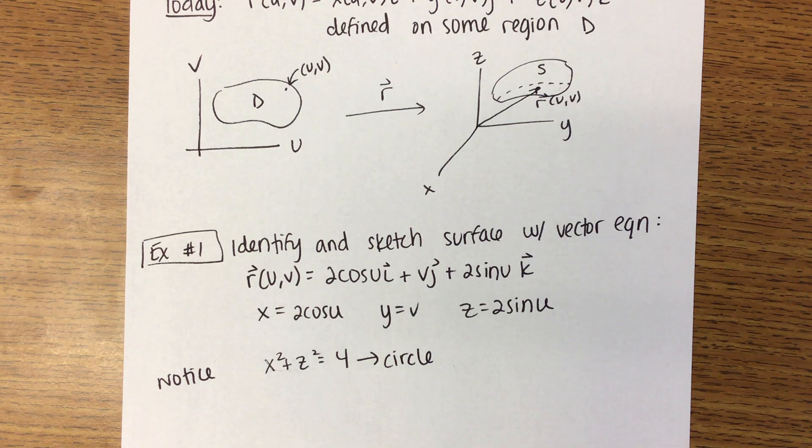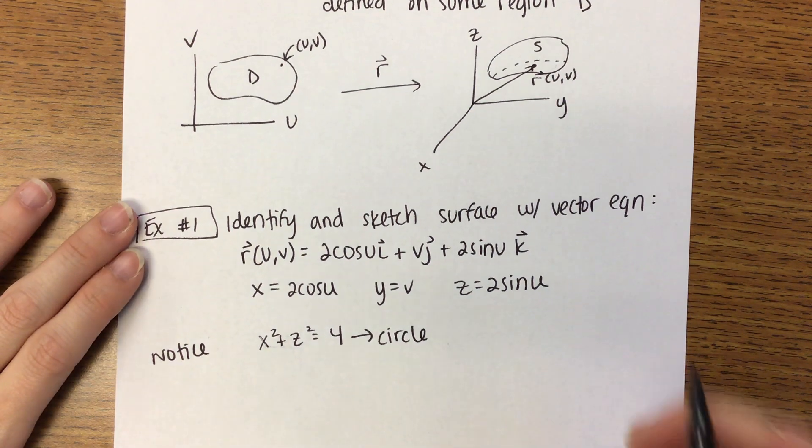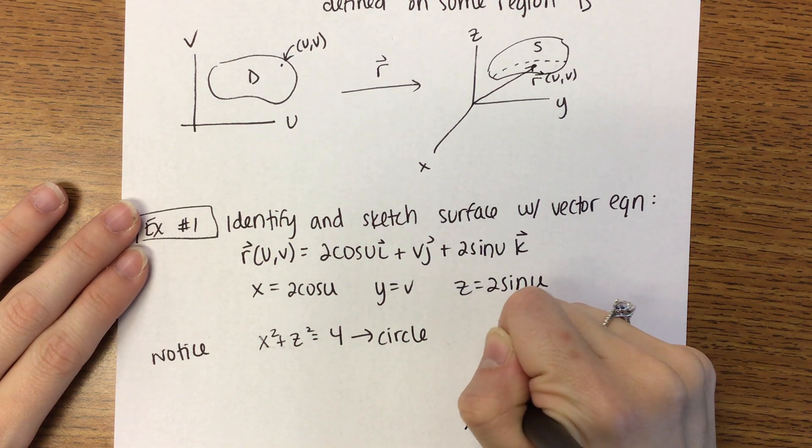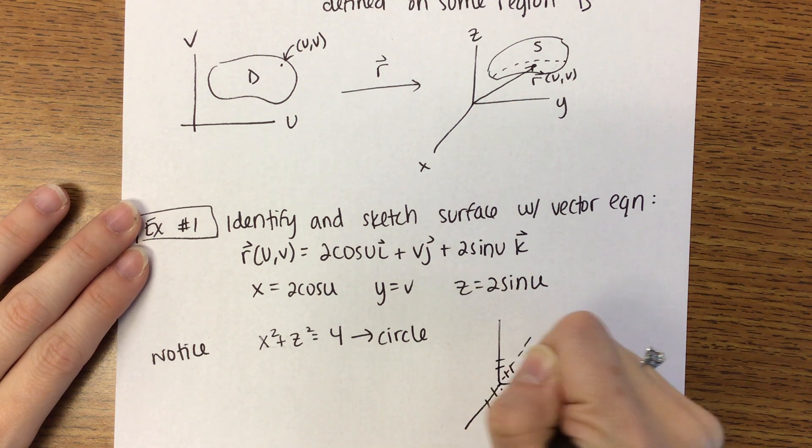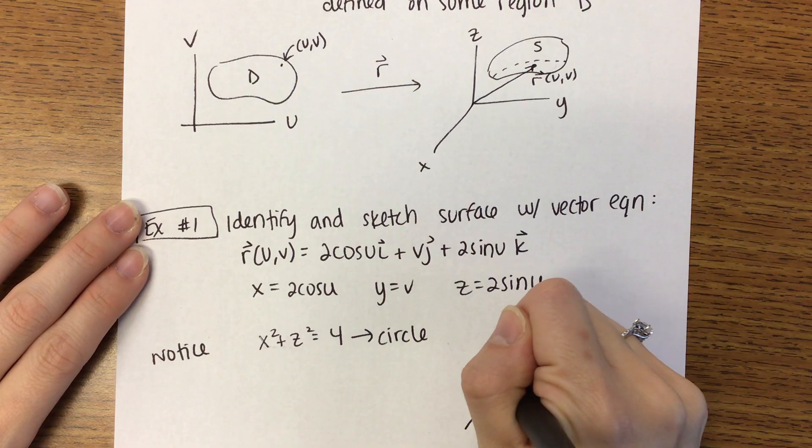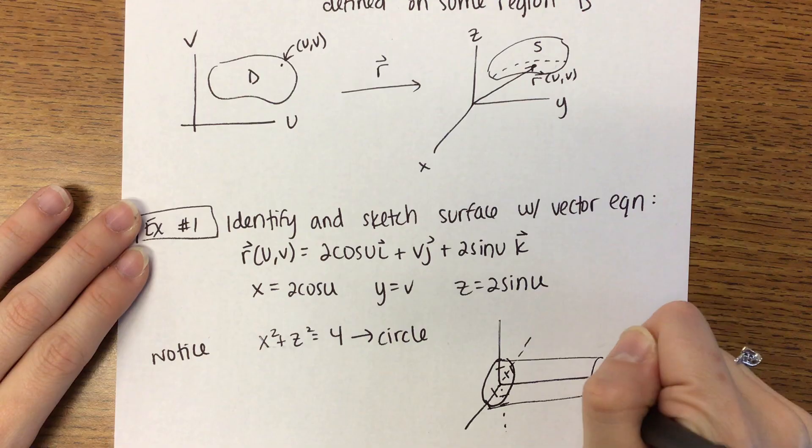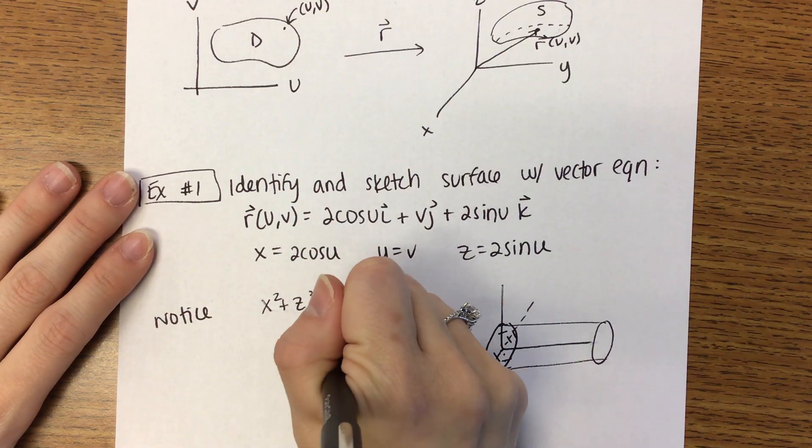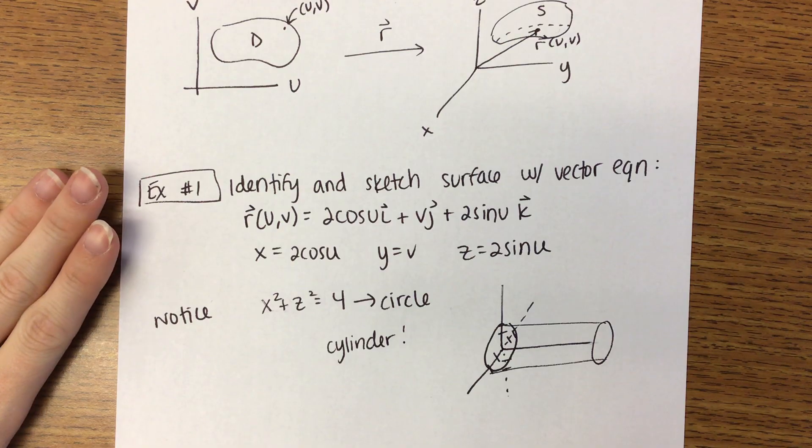So that gives us a circle. Knowing that, what is this surface? Helix. Oh, I'm so sorry. Cylinder. You don't have to be sorry. Yeah, it's a cylinder. A cylinder that goes along the y-axis. Hopefully yours looks better than mine does.